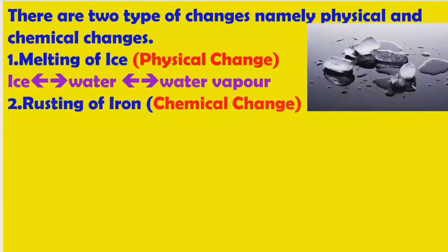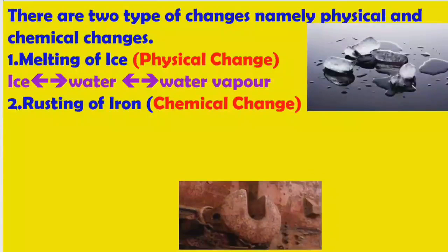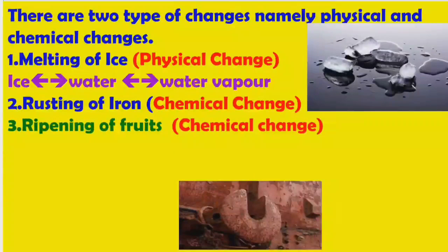Next, if you observe rusting of iron — rusting of iron is a chemical change. In rusting, a new substance is formed. Another example is ripening of fruits, which is also a chemical change.